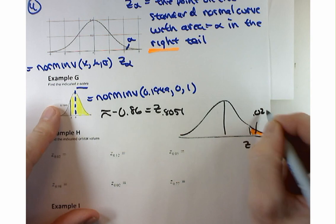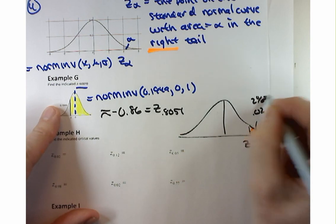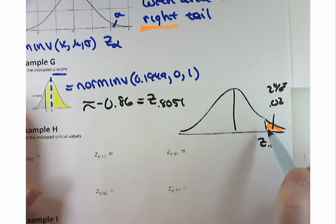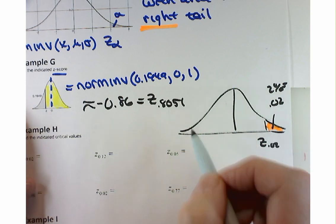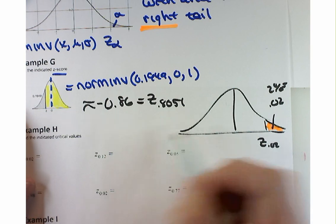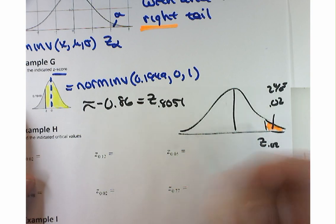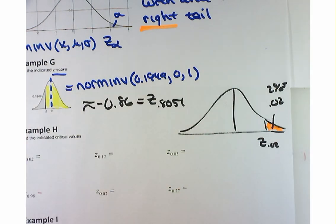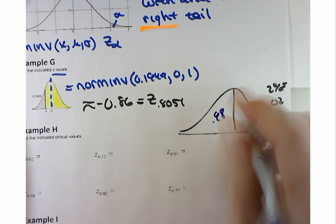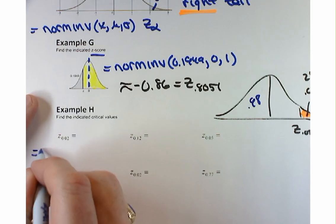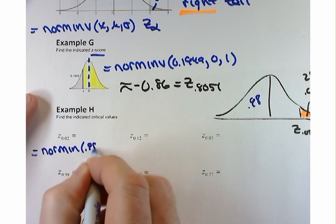I don't want to type in norm inverse of 0.02 because that gives me the point with 2% of the area in the left tail. If 2% of the area is in the right tail, then 98% is in the left tail. So I want to type in 0.98 instead. That's going to look like: equals norm inverse of 0.98, 0, 1.